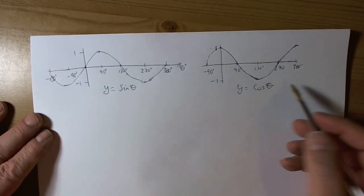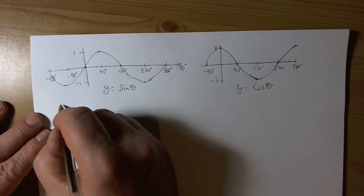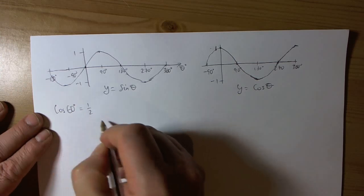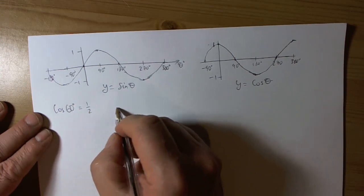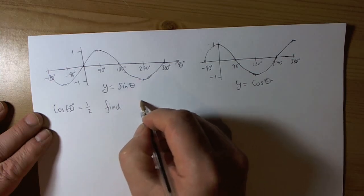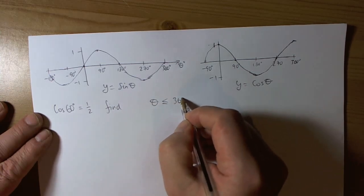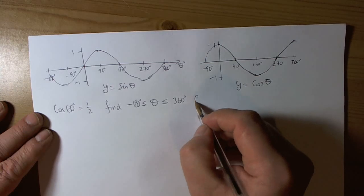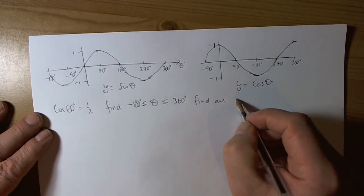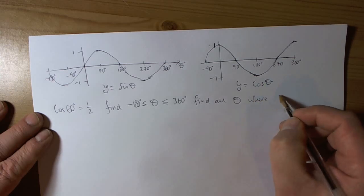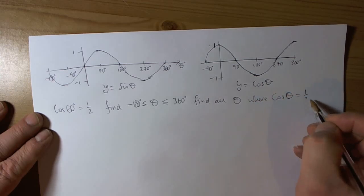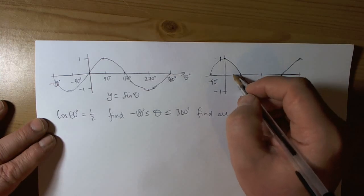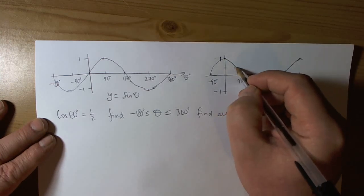So we might be asked questions like, for example, they might tell us that the cos of 60 degrees equals 1 half. And they might then say, find theta in the domain of up to 360 degrees down to minus 180 degrees. Find all theta where the cos of theta equals 1 half. So they've given us this fact that the cos of 60 degrees is 1 half. We look at the cos curve and we can see 60 degrees, 1 half.